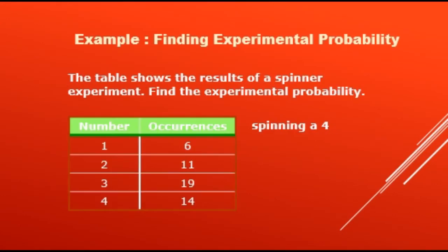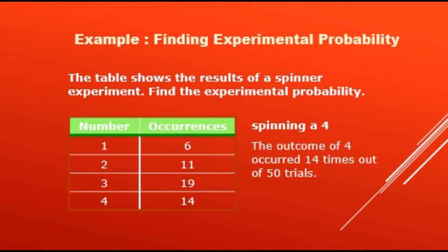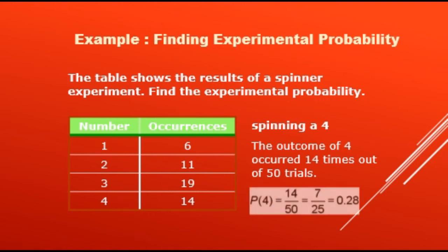Example — Finding Experimental Probability. The table shows the results of a spinner experiment. In our table, outcome 1 occurred 6 times, outcome 2 occurred 11 times, outcome 3 occurred 19 times, and outcome 4 occurred 14 times, for a total of 50 trials. Since we are finding the probability of spinning a 4, the outcome of 4 occurred 14 times out of 50 trials. So experimental probability = 14 over 50, which reduces to 7 over 25, or 0.28.